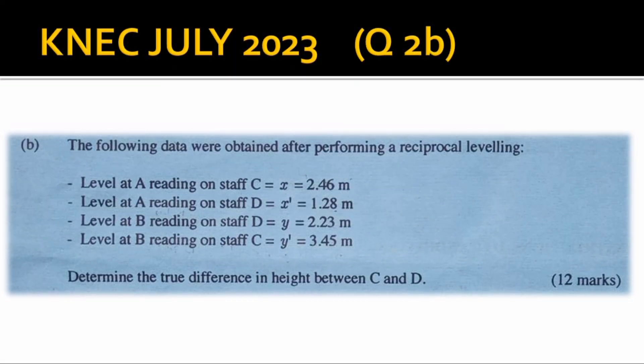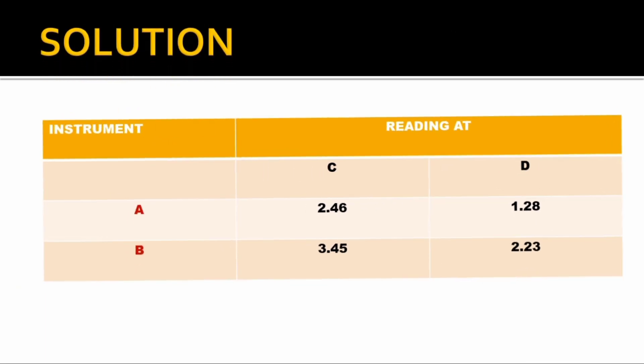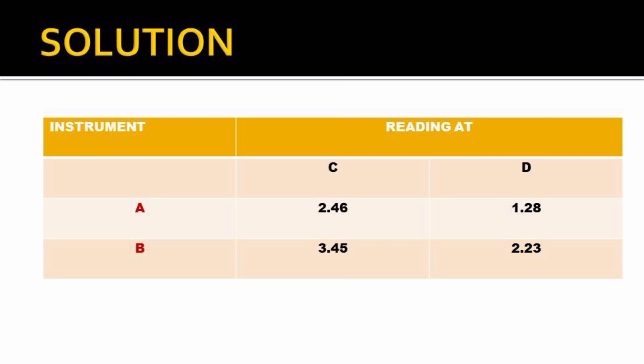Let's go directly to the solution. I have illustrated the table. The instrument was placed at A and the readings were taken both at C and D, and also the instrument was placed at B and the same was done - the readings were taken at C and D. That is all about reciprocal leveling. After this question, make sure you go and read a lot on the same and understand more.